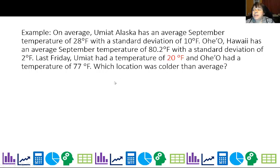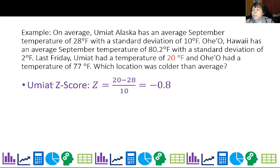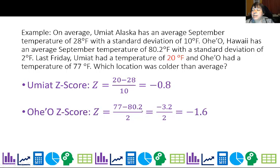Another example: Umayah, Alaska has an average September temperature of 28 degrees Fahrenheit with a standard deviation of 10 degrees. Ohayo, Hawaii has an average September temperature of 80.2 with a standard deviation of 2 degrees. On a Friday in September, Umayah had a temperature of 20 degrees and Ohayo had a temperature of 77. Which location was colder than average? Umayah's z-score is (20 minus 28) over 10, which is negative 0.8. Ohayo's z-score is (77 minus 80.2) over 2, which is negative 1.6. So Ohayo's temperature is further below its average than Umayah's.